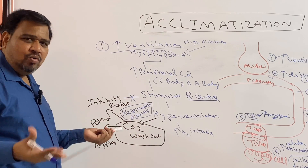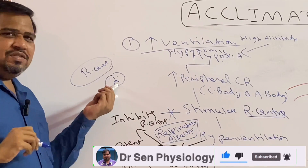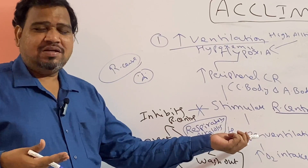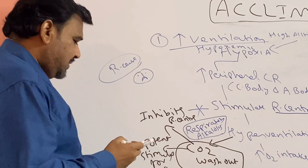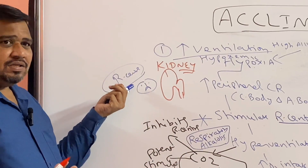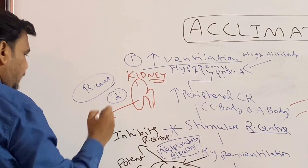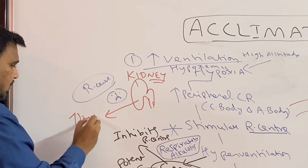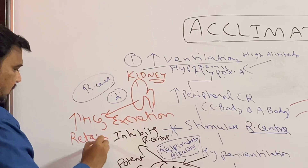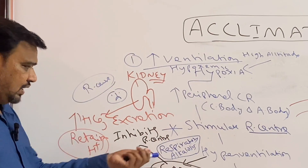Because of respiratory alkalosis, the respiratory center is inhibited — the powerful carbon dioxide stimulus is gone. To compensate, the kidney comes into play. To compensate this respiratory alkalosis and stimulate the respiratory center again, the kidney increases bicarbonate excretion and retains H+. The alkali bicarbonate is excreted and the acidic H+ is retained, compensating the alkalosis and restimulating the respiratory center.